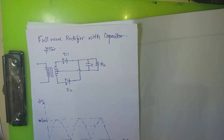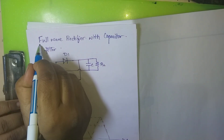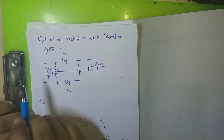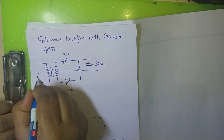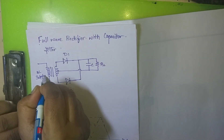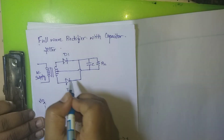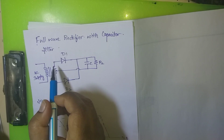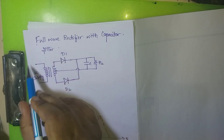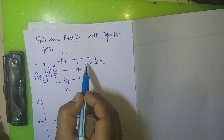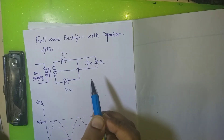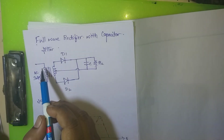The next topic is the full wave rectifier with capacitor filter. We have understood how a full wave rectifier works; now let us understand how a capacitor filter works when connected to it. In the circuit we have the full wave rectifier, a capacitor filter C, and load resistance RL, which together form the capacitor filter.